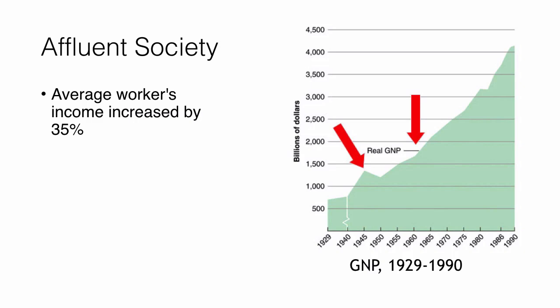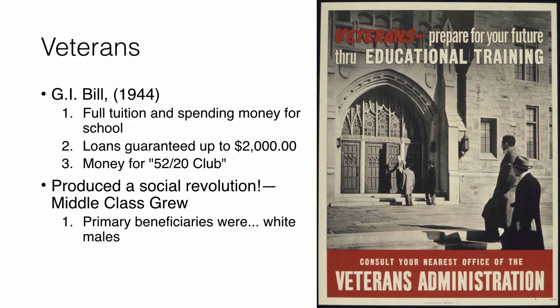Because there's more affluence in American society, veterans get in on that. In 1944, Congress passes the GI Bill, which guarantees number one, full tuition for college, and number two, loans up to $2,000 for soldiers or ex-military. They also belong to the 52-20 Club, which guaranteed them $20 a week for 52 weeks — that's $20 a week for a year.